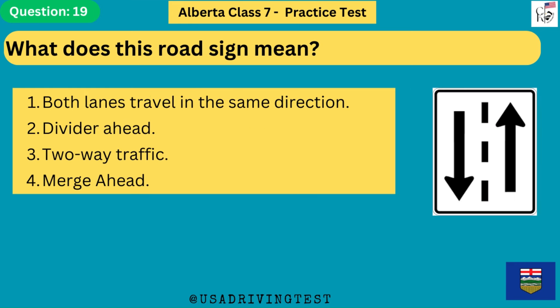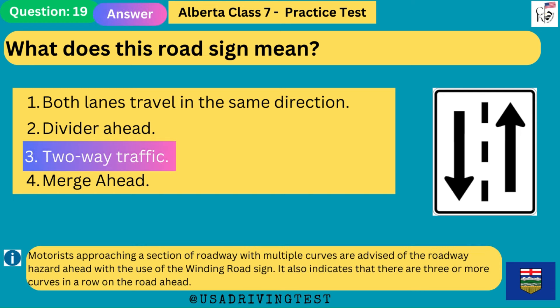What does this road sign mean? 1. Both lanes travel in the same direction. 2. Divider ahead. 3. Two-way traffic. 4. Merge ahead. The answer is 3: two-way traffic. Motorists approaching a section of roadway with multiple curves are advised of the roadway hazard ahead with the winding road sign. It also indicates that there are 3 or more curves in a row on the road ahead.